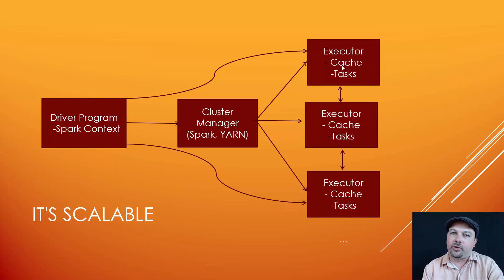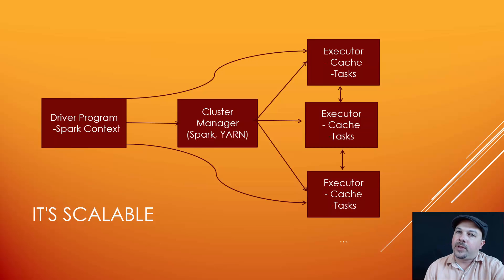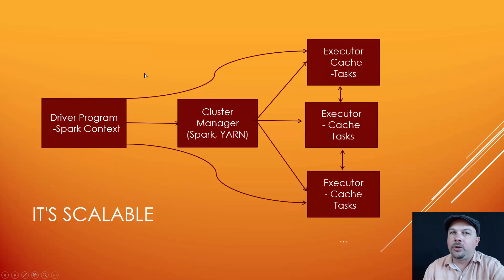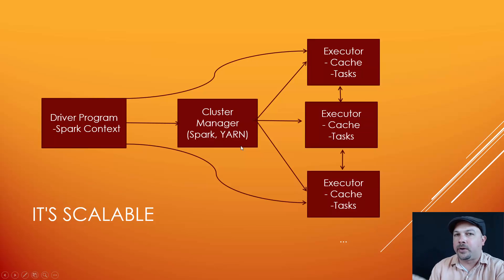Your cluster manager figures out how to recombine all that data and pass it on to the next step if necessary. The beautiful thing is that all this just happens automagically for the most part. All you really concern yourself with as a Spark programmer is primarily the logic about how you're going to process this data — Spark and the cluster manager are responsible for figuring out how to distribute it efficiently.